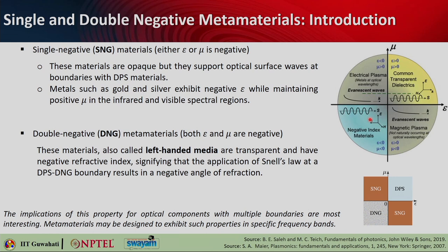Double negative materials also support wave propagation, but the direction of wave propagation and the direction of the Poynting vector are opposite. In double negative media, the k vector — wave propagation — happens in the backward direction, whereas energy propagates in the forward direction. In contrast, for double positive materials, E cross H using the right-hand thumb rule shows wave propagation and energy flow in the same forward direction, where S is the Poynting vector.